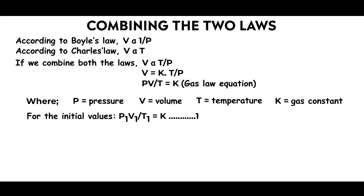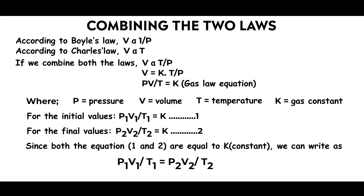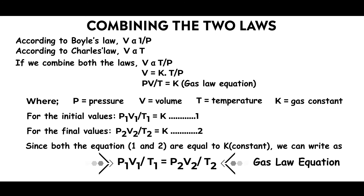For initial values: P1V1/T1 = K. For final values: P2V2/T2 = K. Since both equal K, we combine them to get P1V1/T1 = P2V2/T2. This is called the combined gas law, or simply the gas law equation.